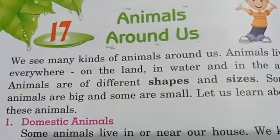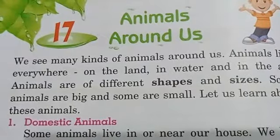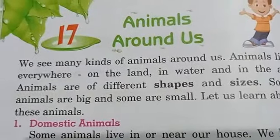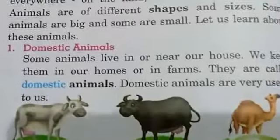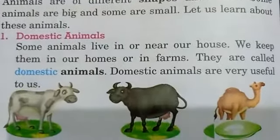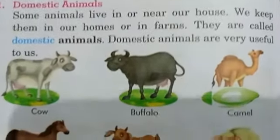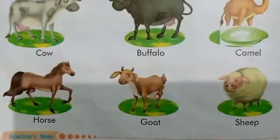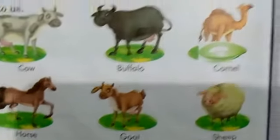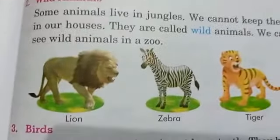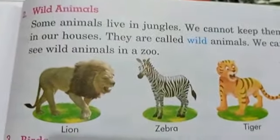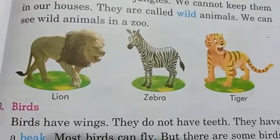That means we can see different shapes and sizes around us. There are many types of animals — like domestic animals. These are examples of domestic animals. And wild animals — these are examples of wild animals. And birds.